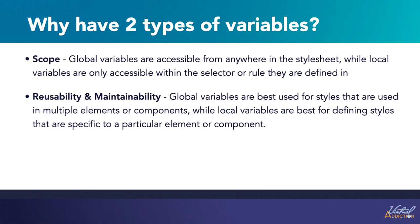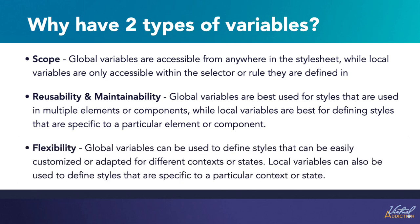Both global and local variables can also make CSS code more maintainable and provide flexibility. Global variables can define styles that are easily customized or adapted for different contexts or states, while local variables define styles specific to a particular context or state. In general, global variables are best for styles used across multiple elements throughout the website, while local variables are best for styles specific to a particular element or component — both can make CSS more reusable, maintainable, and flexible depending on the use case.